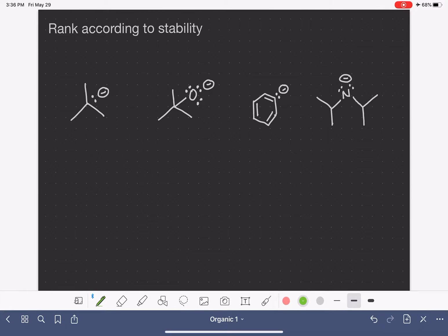We are now ready to practice ranking molecules according to their stability or according to their reactivity using the ARIO concept. We're going to start with a set of four anions and we are going to rank them based on their relative stability.